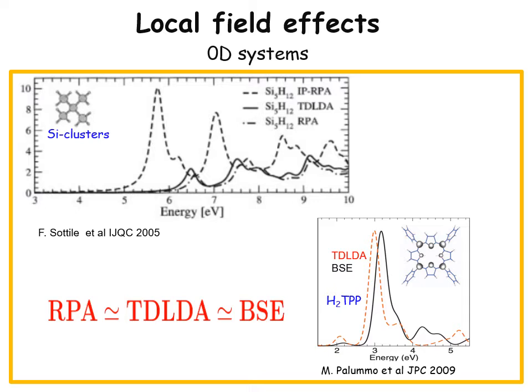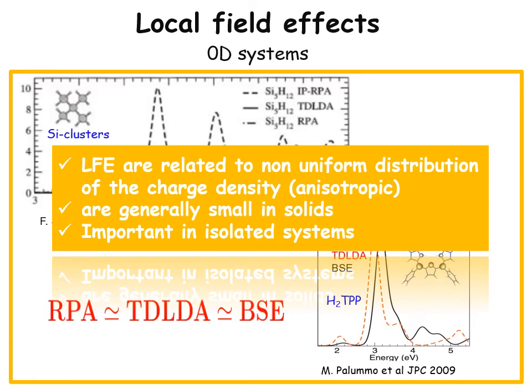As you can see in the bottom panel, the TDLDA, for instance for a small porphyrin molecule, reproduces pretty well the Bethe-Salpeter calculation, which is in very good agreement with experimental data. The take-home message of this part of the seminar is that local field effects are related to a non-uniform distribution of the charge density, they can be quite anisotropic, they are generally small in solids, while they are quite important in isolated systems.